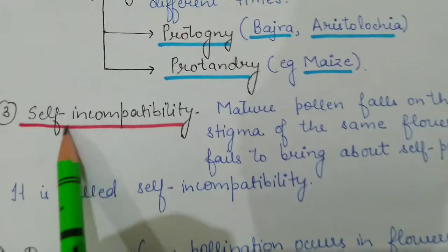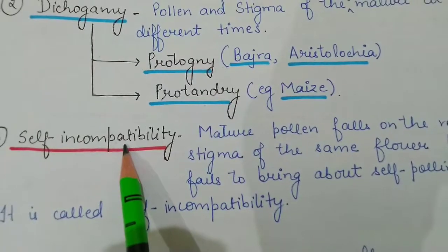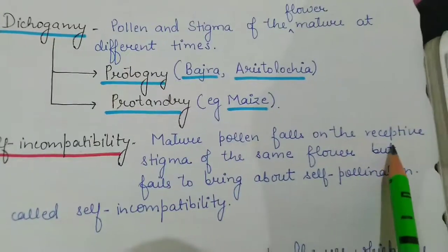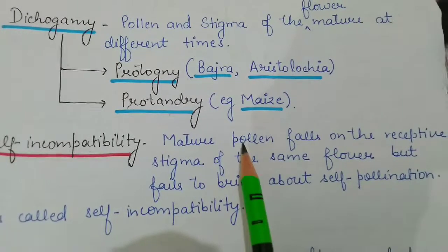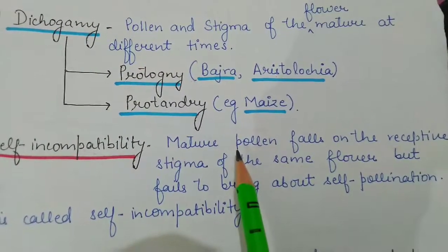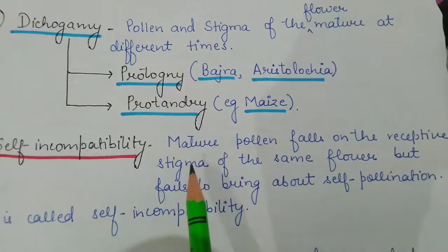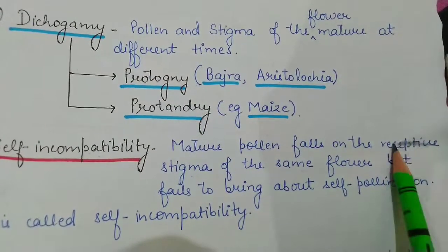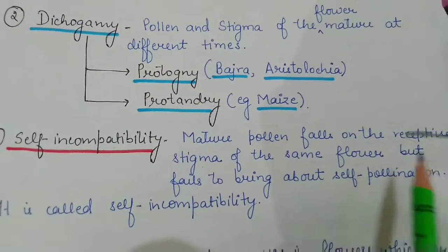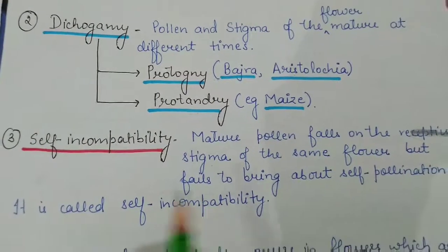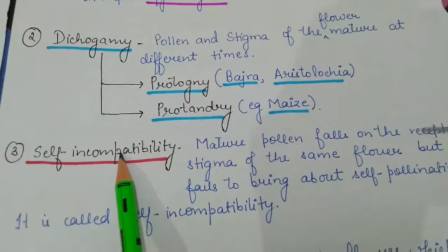The third character is self-incompatibility. In some plants, mature pollen grains fall on the receptive stigma of the same flower — a bisexual flower where both sexes are present — but the pollen fails to bring about self-pollination. The stigma is not receptive to its own pollen. This phenomenon is called self-incompatibility.